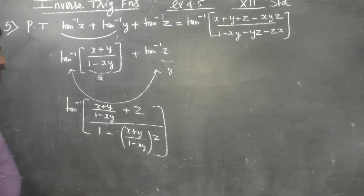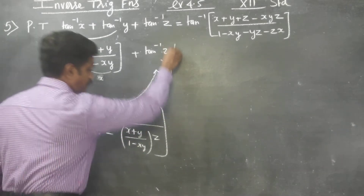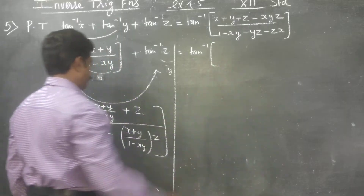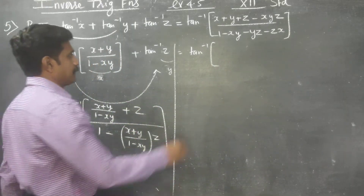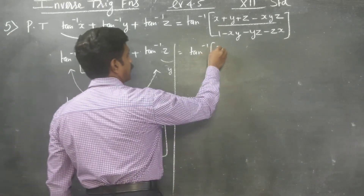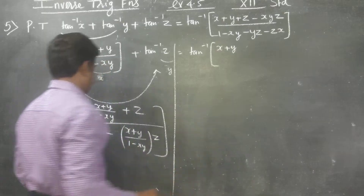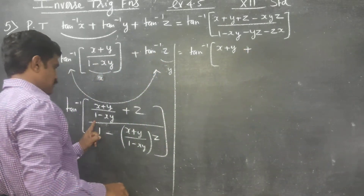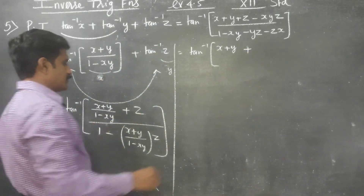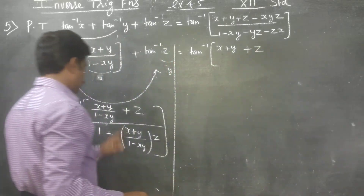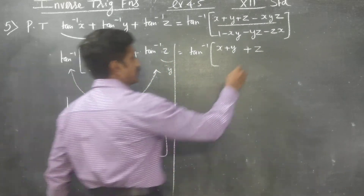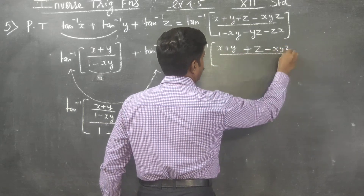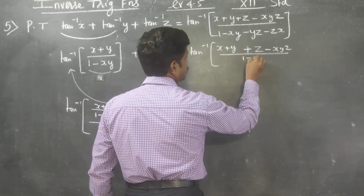Then simplifying this, you will be getting tan inverse of the following: taking the LCM and cross multiplying, the numerator becomes x plus y plus 1 times z, which is z, minus xy times z, which is xyz. All divided by (1 minus xy).